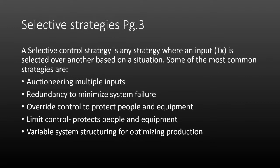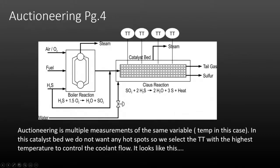Limit controls are put in place to protect people and equipment — you'll see limit controls quite a bit on furnace type systems. The last one is called variable system structuring for optimizing production. The first application is auctioneering. Here we have a reactor bed or catalyst bed where we take temperatures across the bed. The auctioneering function takes multiple measurements of the same variable — in this case, the temperature of the reactor bed.